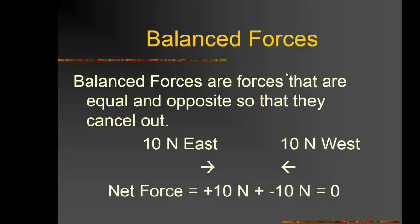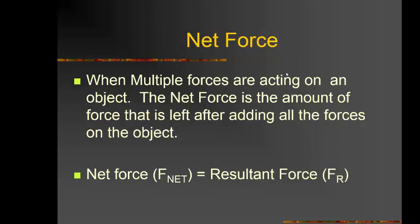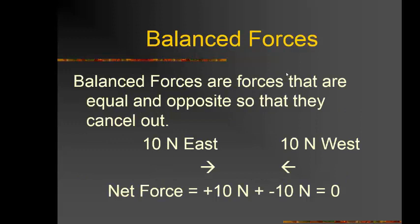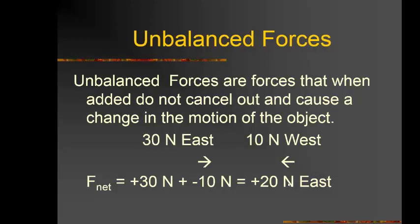Net force equals resultant force. Balanced forces are forces that are equal and opposite, so they cancel out. For example, if a force is 10N to the east and 10N to the west, the net force is 10N + (−10N) = 0.